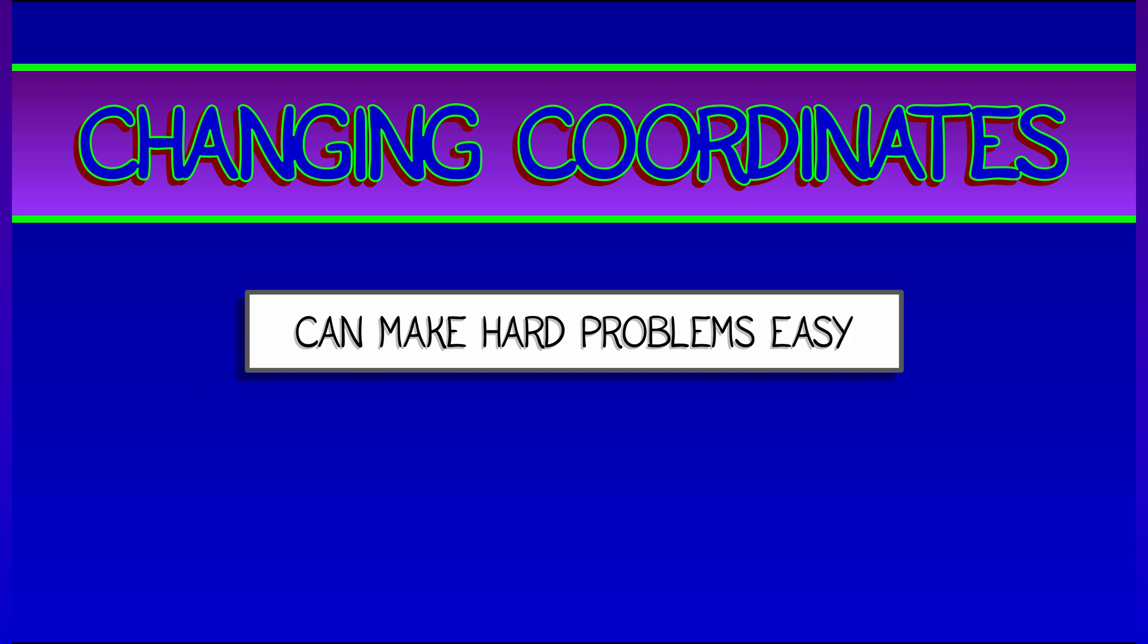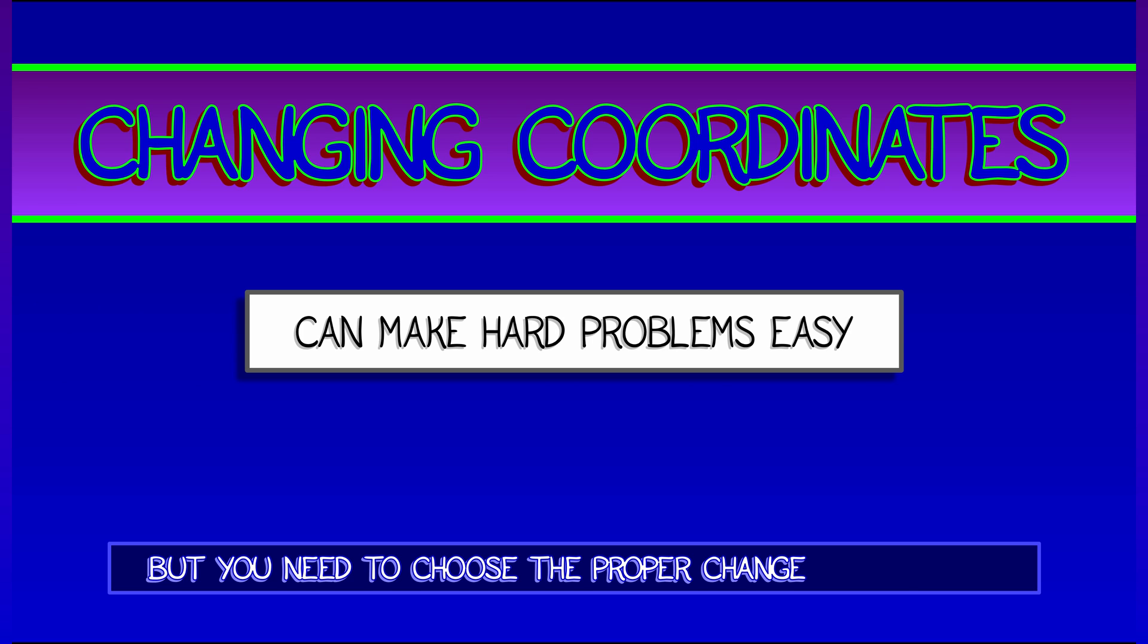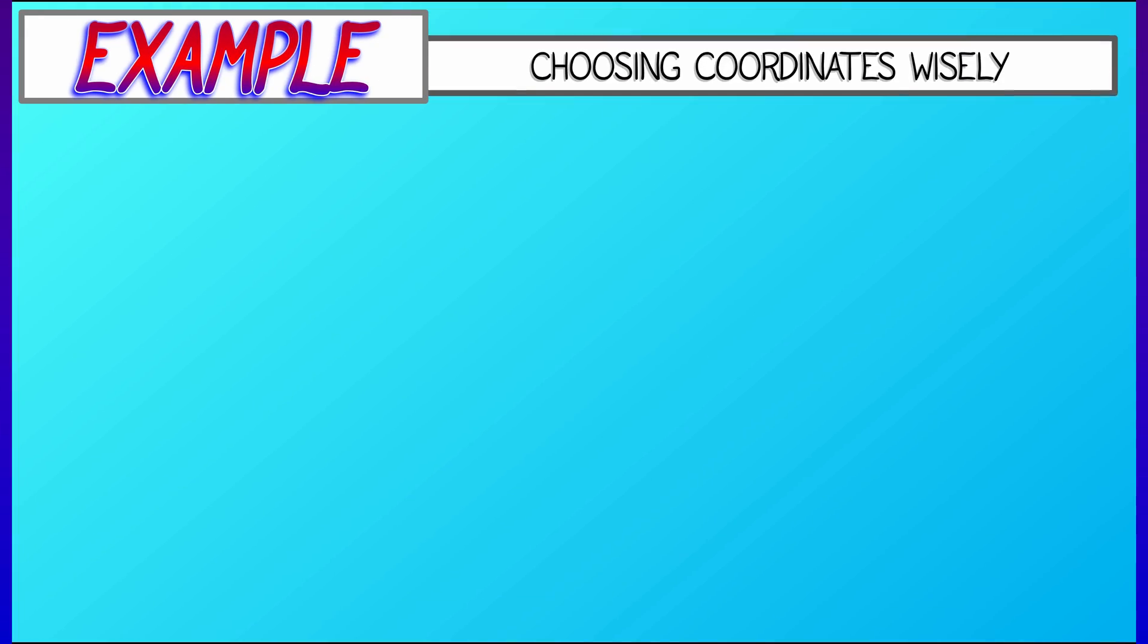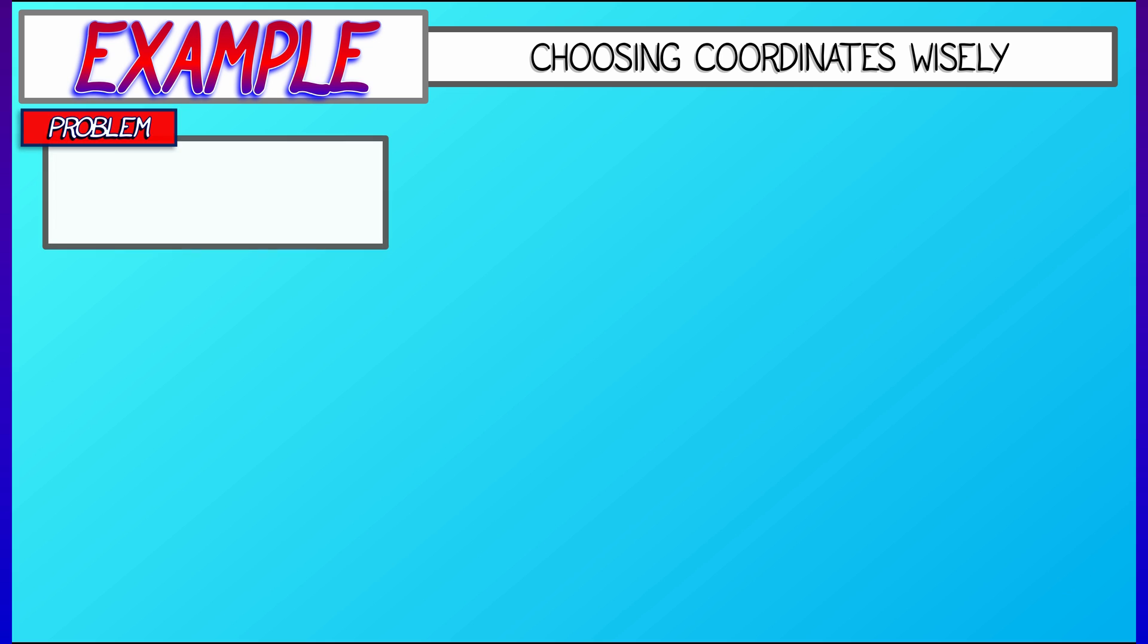Now, changing coordinates can really make hard problems easy, but you need to know the right variables to use in the change of variables theorem. Let's see an example where choosing the right coordinates really helps.